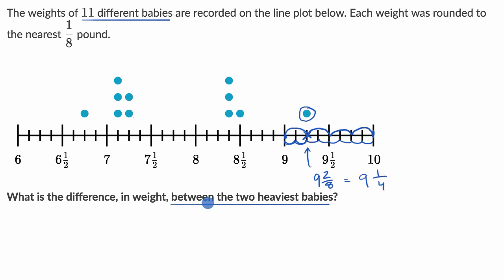And then what's the second heaviest baby? Because we want the weight difference between the two heaviest. So the second heaviest baby is right over here. And we know that it is 8 and a half pounds.